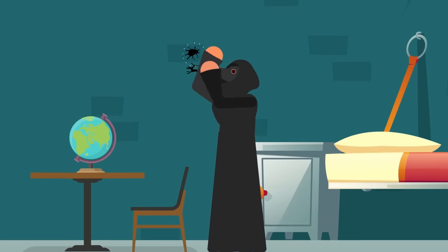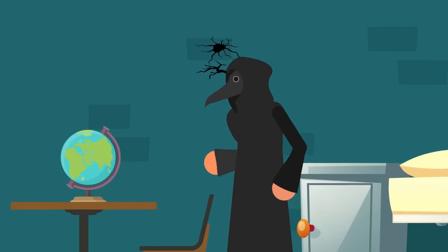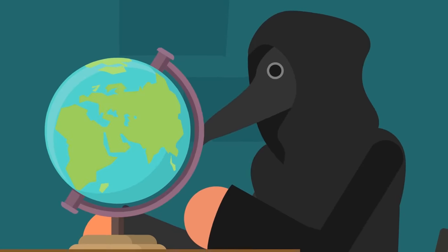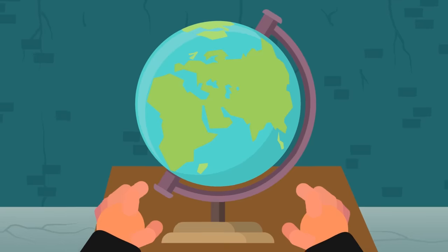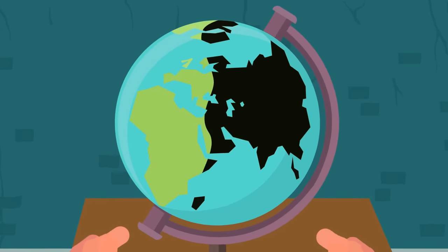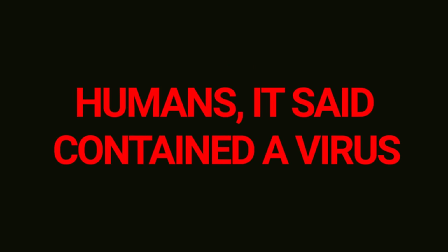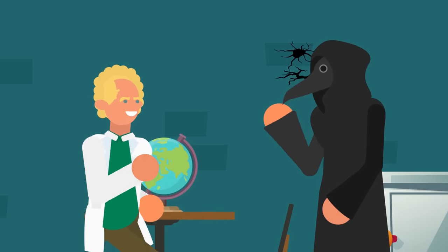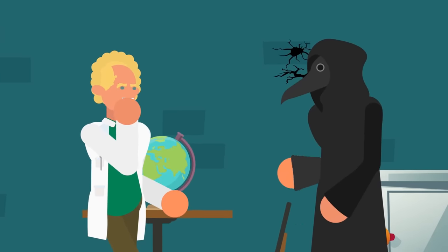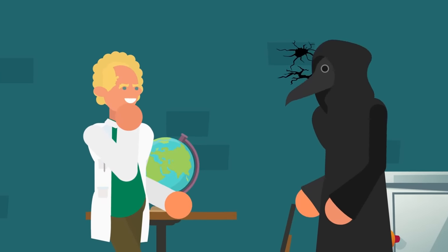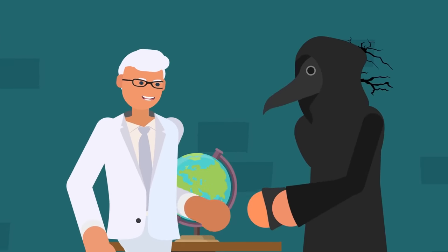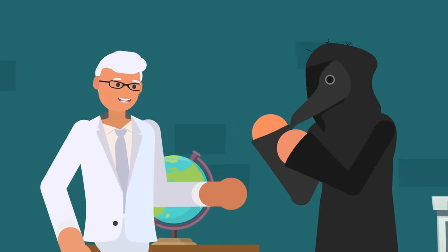This was not to the liking of 049, who would claim it had cured the animals. For it, the world was sick. It saw plague and pestilence everywhere, and the meaning of its existence was to rid the world of disease. Humans, it said, contained a virus and had to be cleansed. In the first days after arriving at the facility, 049 didn't seem to pose a threat to humans. It was quite friendly, in fact. It seemed aware of the fear it caused in staff, and would often go out of its way to make them feel comfortable and safe.